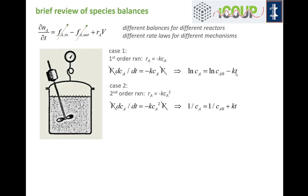Different rate laws integrate to different relationships between concentration and time. If you do this with a second order reaction in a batch reactor, so those flow terms are vanishing, then you end up with 1/C_A being linear as a function of time.